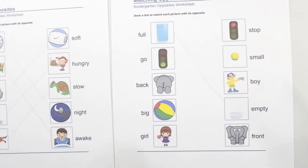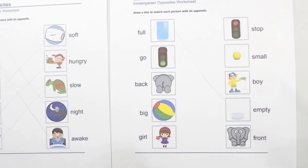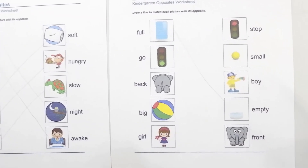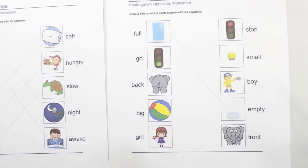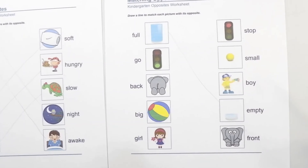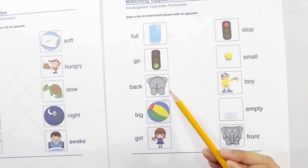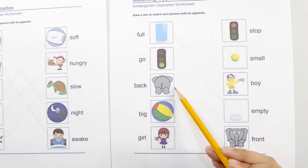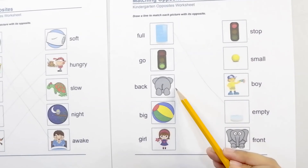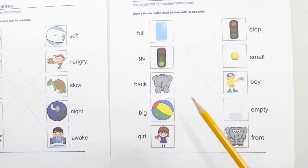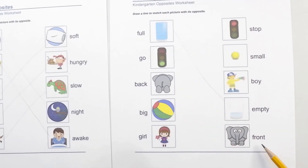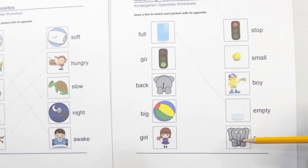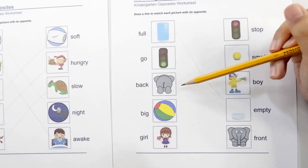Very good. Okay, look at this cute little back of an elephant. The back of an elephant contrasts with front. Back and front are opposites.